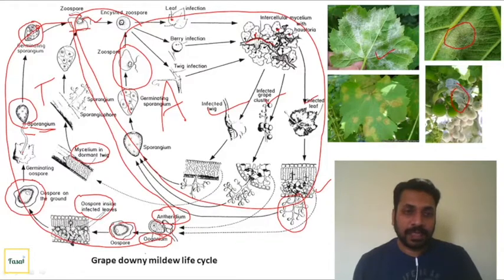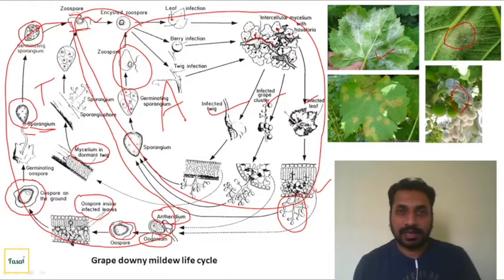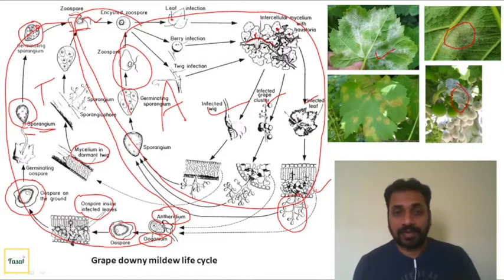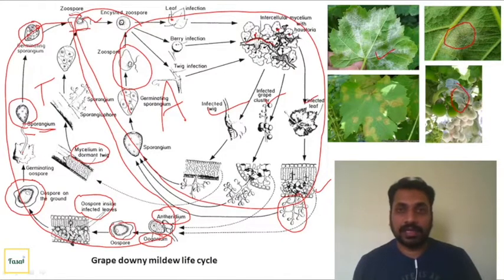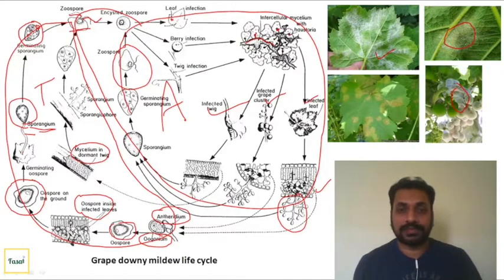This sexual stage - from antheridium/oogonium through to oospore formation - is known as the telomorphic stage. The oospore is a resting spore which produces the sporangium, inside which zoospores will be present. The zoospores then undergo encystment, infect the leaves, and cause disease. Farmers are instructed to remove infected plant parts or infected leaves, because the mycelia or spores overwinter or oversummer in infected parts. This is the example of both sexual and asexual life cycle in grape downy mildew.